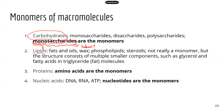Lipids, strictly speaking, are not polymers because they do not have the same kind of repeated subunits joined together — we'll talk about lipid structures in more detail later. Proteins are made up of amino acids, so amino acids are the monomers for proteins. Nucleic acids — DNA and RNA — are the genetic material, and they are made up of nucleotides. Nucleotides are the monomers for nucleic acids.